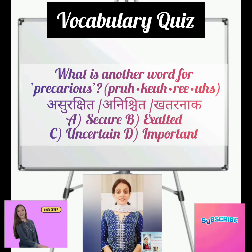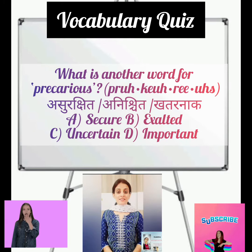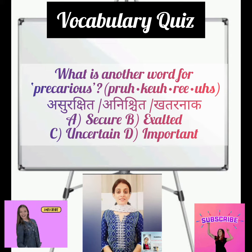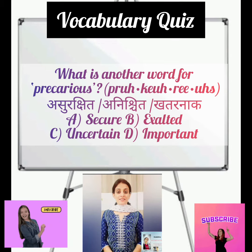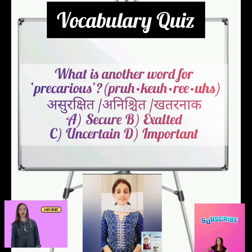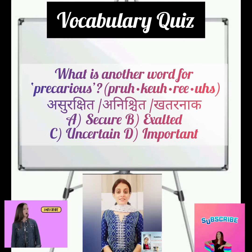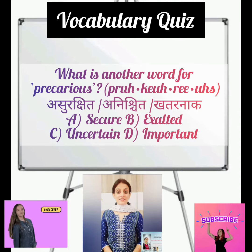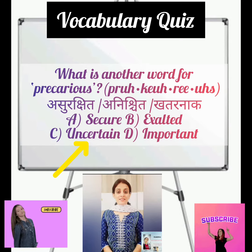What is another word for precarious? First of all, this meaning should be known as surakshit, anishtit, and khatrnaak. Options are secure, exalted, uncertain, and important. We know that it is not secure, exalted, and important. So, the word with the same meaning is uncertain.